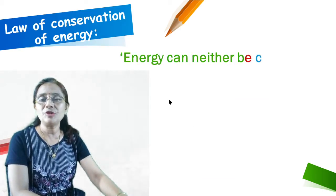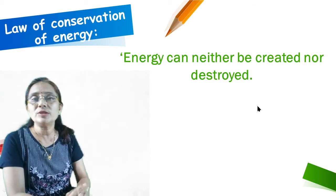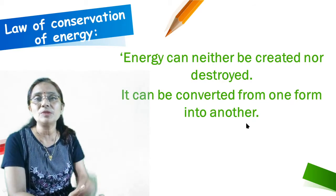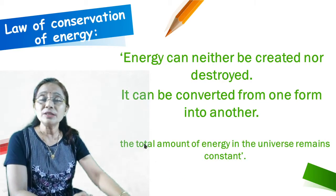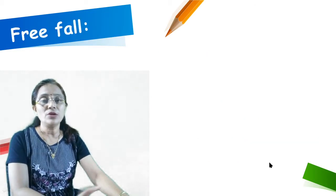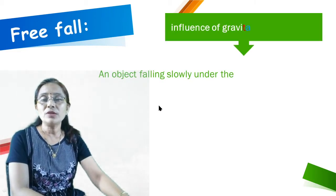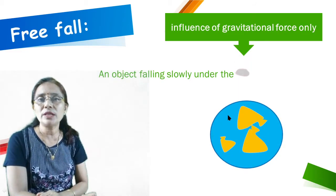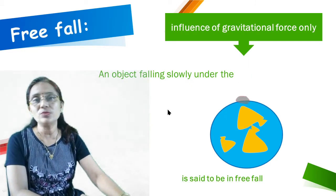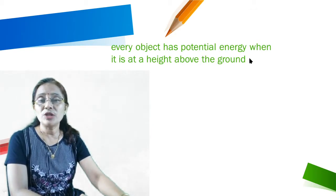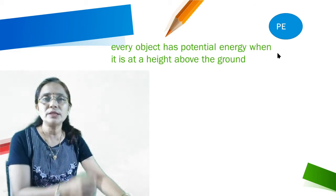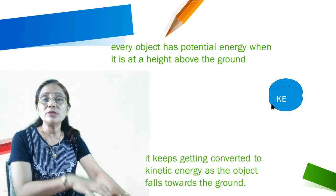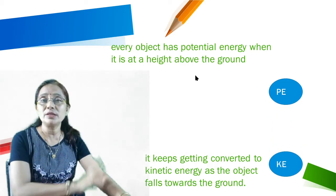The law of conservation of energy states that energy can neither be created nor destroyed; it can only be converted from one form to another. The total amount of energy in the universe remains constant. When an object falls freely under the influence of gravitational force alone, every object has potential energy at height. As it falls, this potential energy is converted into kinetic energy. When the object reaches the ground, the total potential energy is converted into kinetic energy.